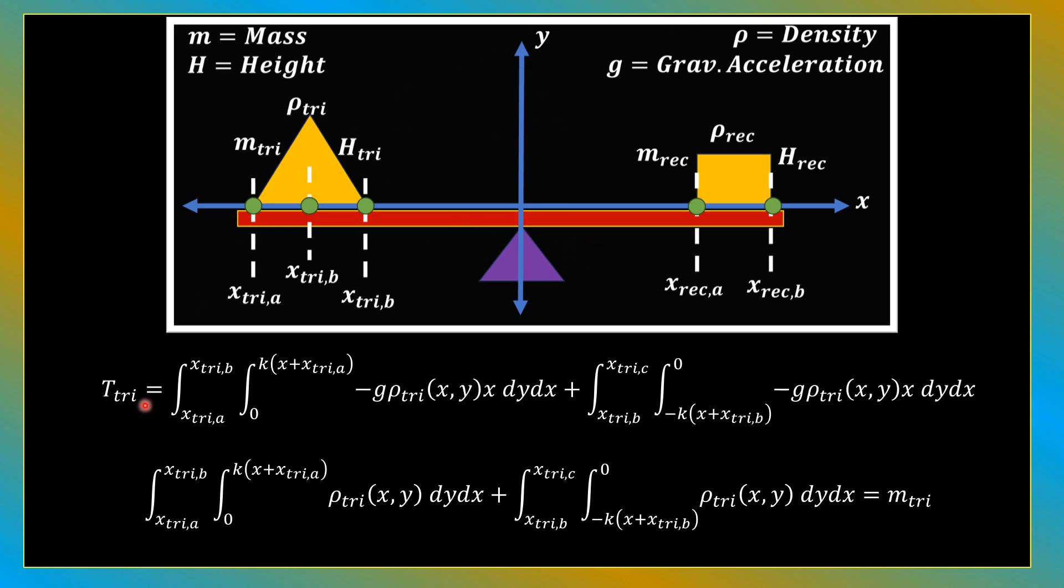All right, so here are the equations. T_tri is the torque contributed by the triangle. And then we also have this equation down here, which is equal to the mass of the triangle. Remember, torque in this case is the vertical force multiplied by the horizontal displacement. In the equation for torque, we are summing infinitesimal torques over the area of the triangle.